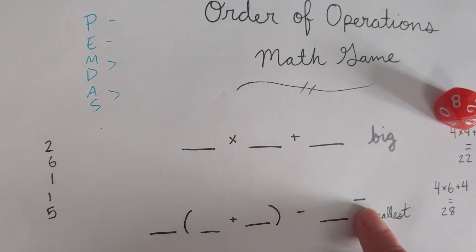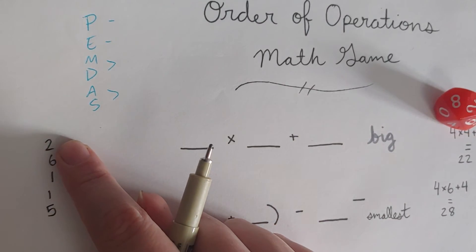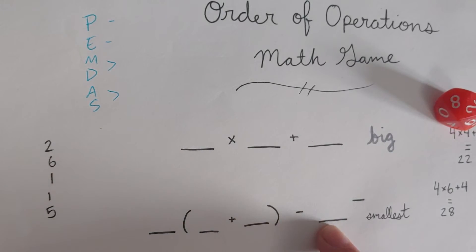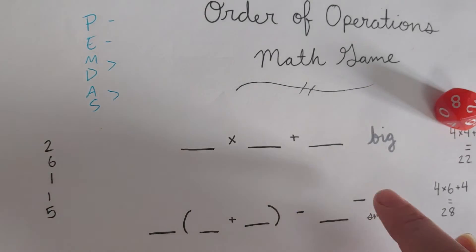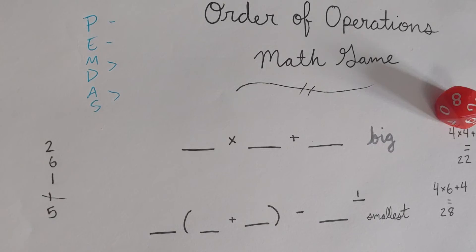I know that exponents make things really big really fast, so I'm going to make sure I don't put a big number in my exponent position. Because if you square a number, you times it by itself — and that's just from putting a two in the exponent. If I put a six in the exponent, I'd be taking that number and multiplying it by itself six times. So I'm going to use one of my ones and put it right there, then cross it out. I'd want to do this work in pencil so you can keep track.